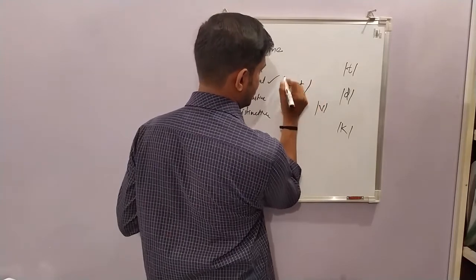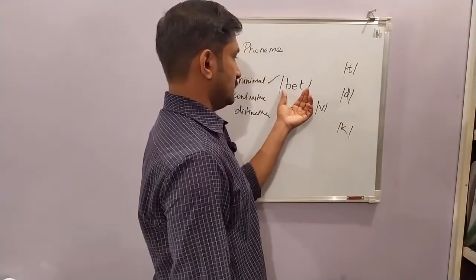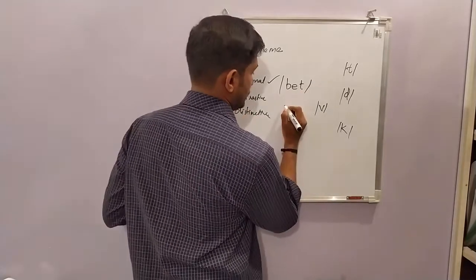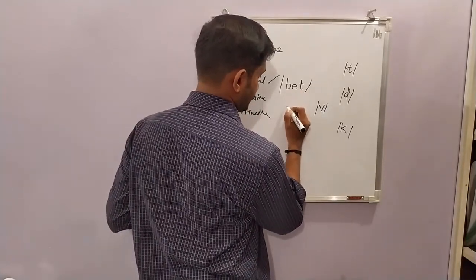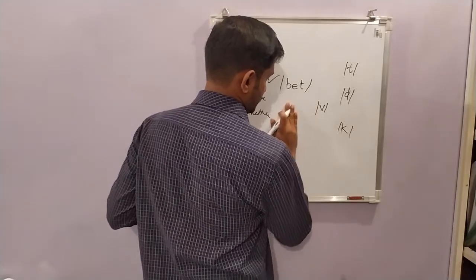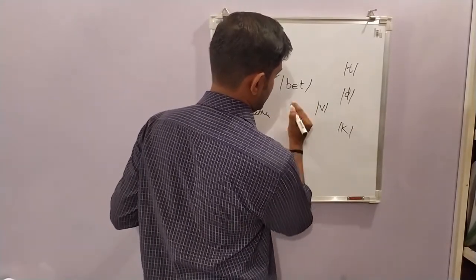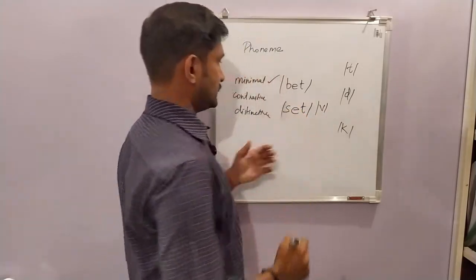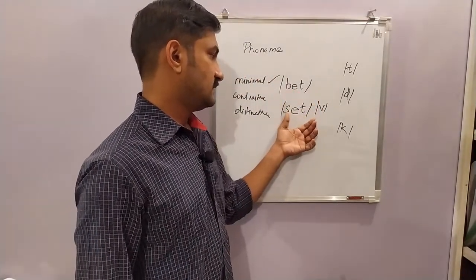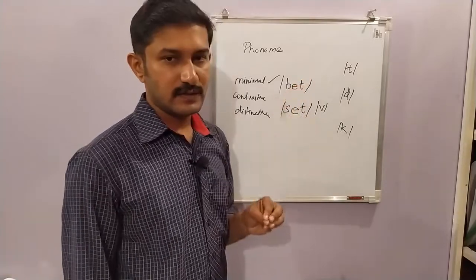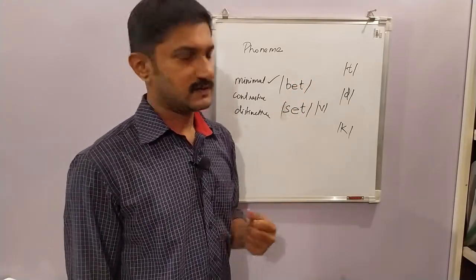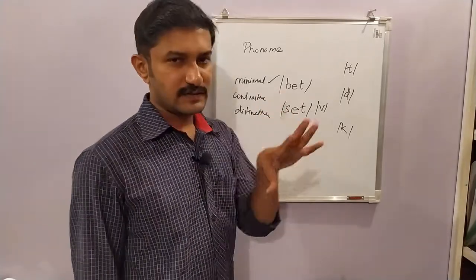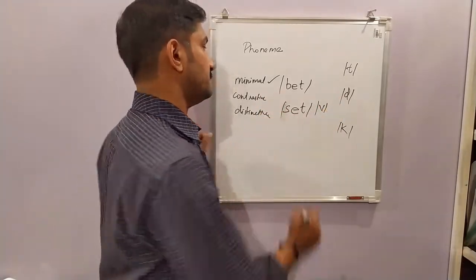The word 'bet' — we have three sounds: b, e, t. Then we substitute 'b' with 's', and it creates a new word 'set', which has another meaning. So these sounds are contrastive and at the same time distinctive.